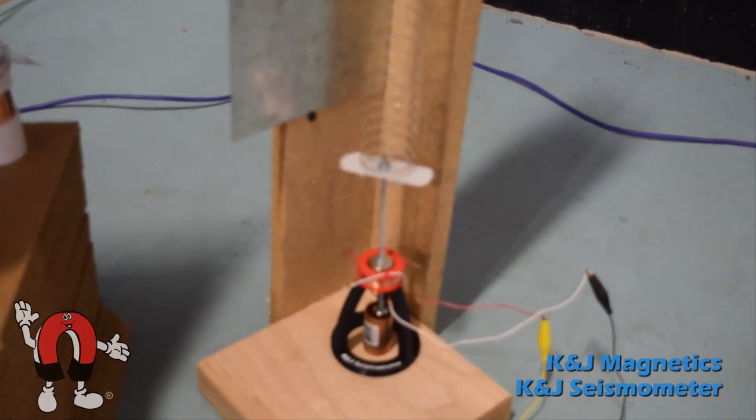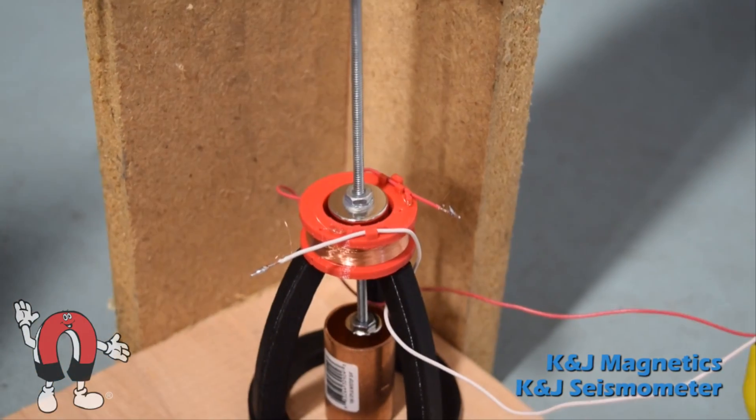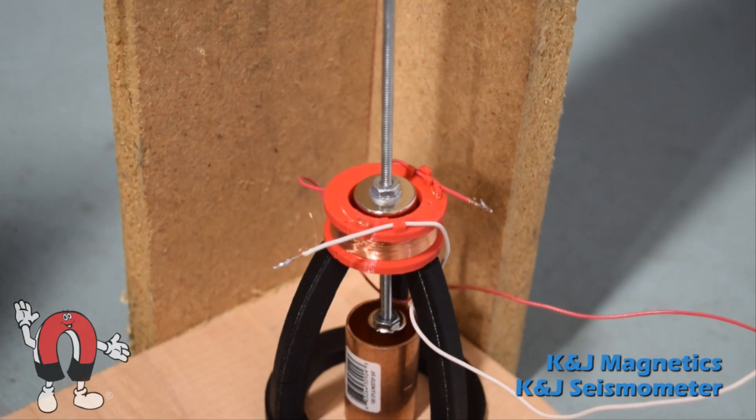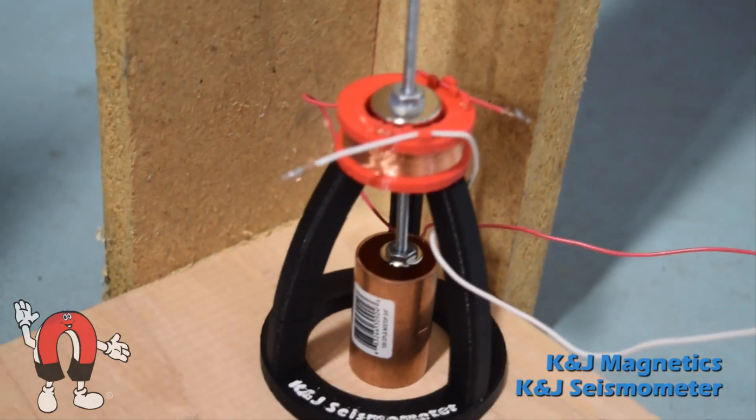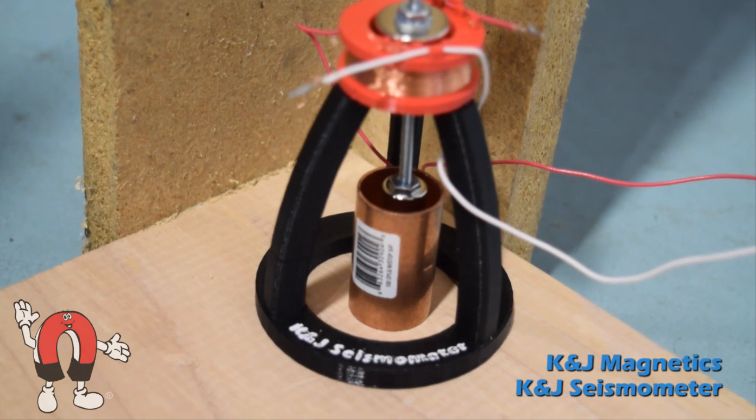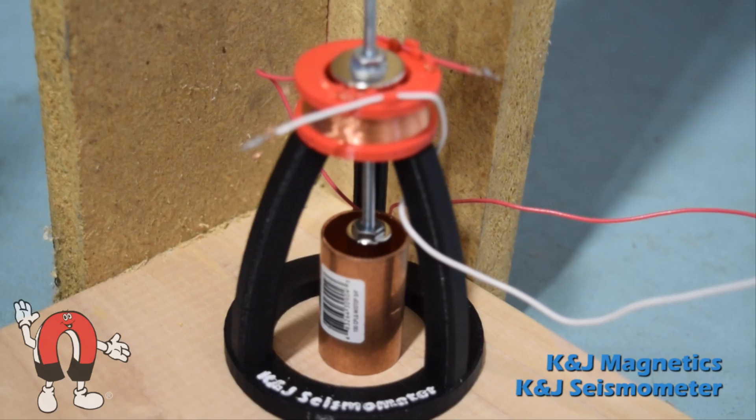Down at the end of it, on a piece of threaded rod, are a couple of magnets. We used two RC44s stacked together, which fit nicely in our coil. Underneath, you can see a magnet sitting in a copper pipe that dampens the motion so it doesn't bounce up and down forever.